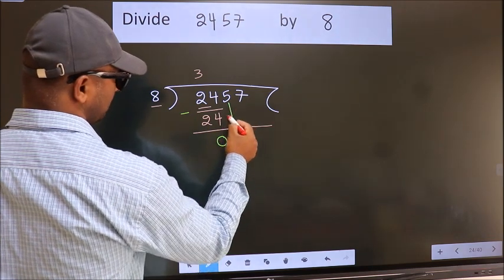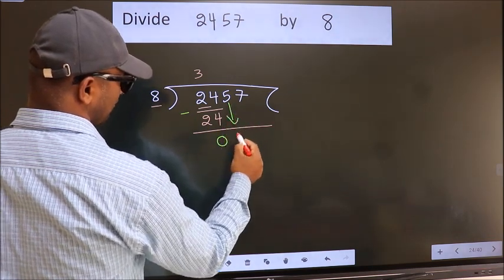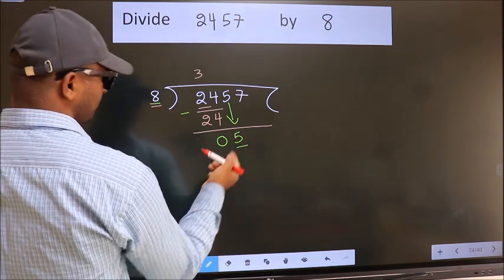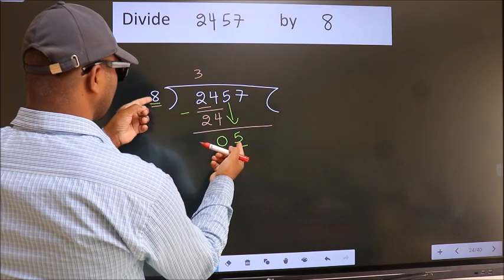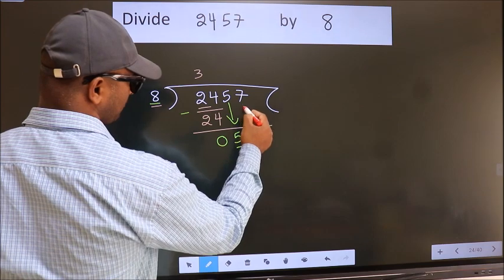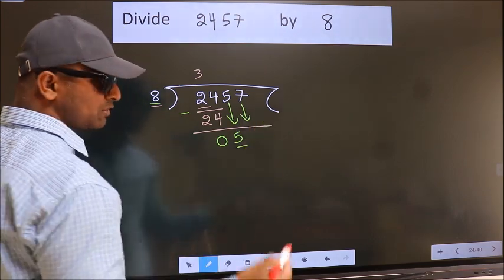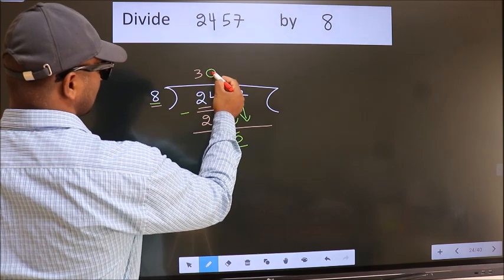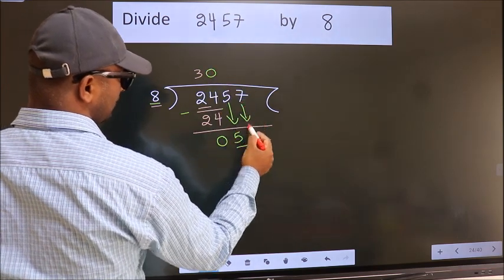After this, bring down the beside number. So 5 down. Here we have 5, here 8. 5 is smaller than 8. So we should bring down the second number. And the rule to bring down the second number is put 0 here. Then only we can bring down this number.